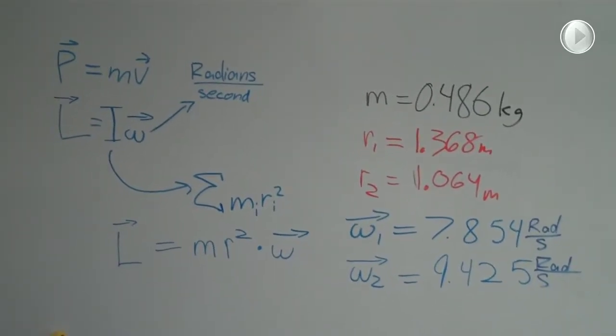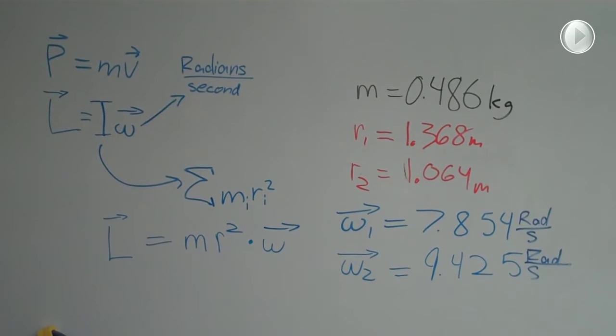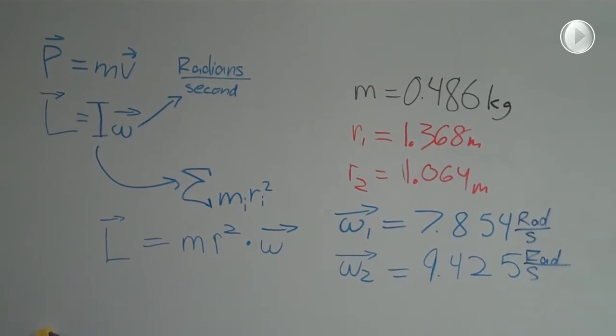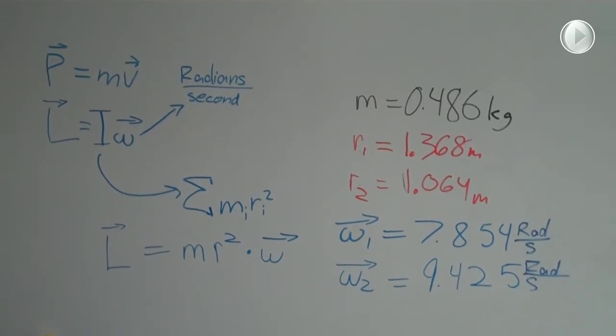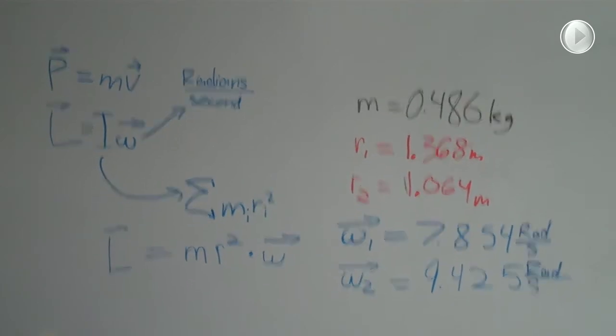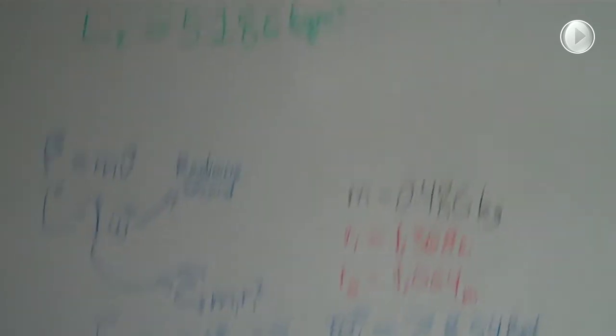On the left, we have the equation that we explained earlier. On the right, we have mass, the average radius of the first rotation, average radius of the second rotation, and our angular speeds in radians per second.